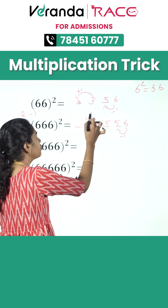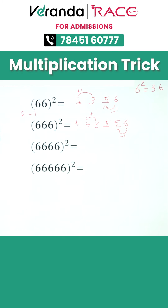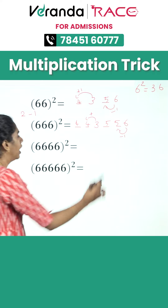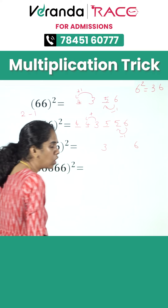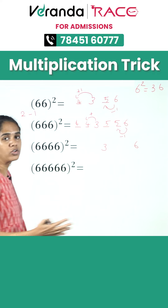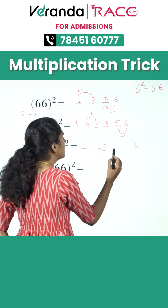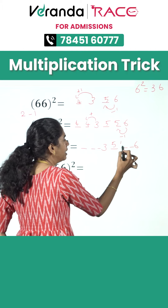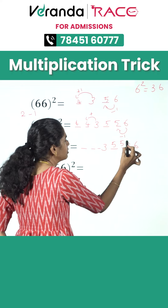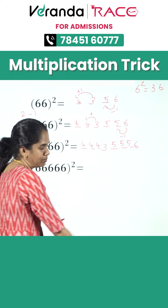Similarly for 6666 squared, we take 3 and 6 as constants. There are four 6s, so we need to place 3 digits before 3 and 6. So 5 will get repeated 3 times and 4 will get repeated 3 times.